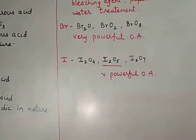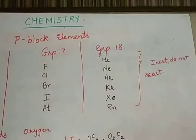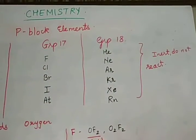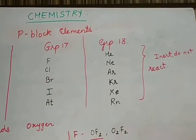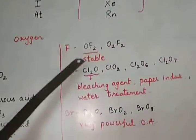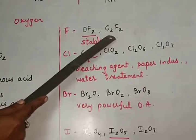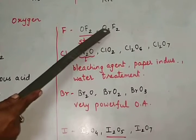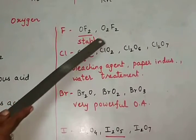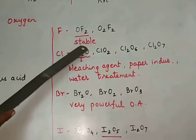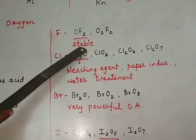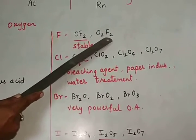We now come to group 17 elements. The different oxides form. Fluorine can form oxide OF2, oxygen difluoride, and O2F2, oxygen fluoride. Out of this, OF2 is an oxide which is stable and this oxide is unstable.